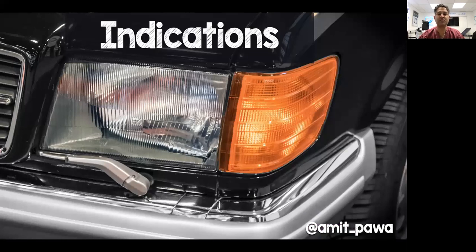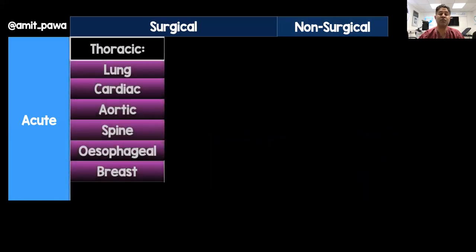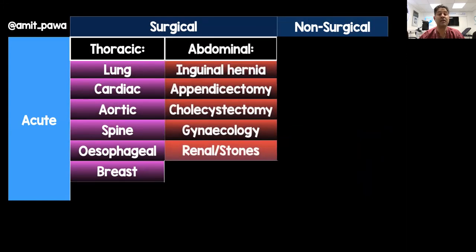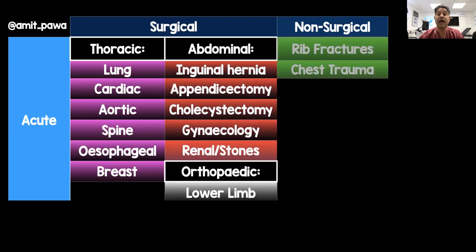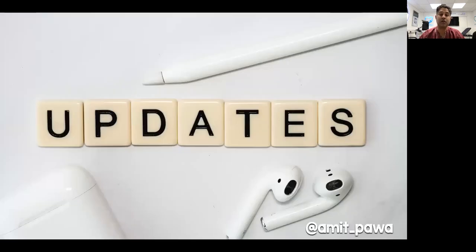There are many indications for the paravertebral block, which we can split into acute surgical and non-surgical. Probably the biggest area is thoracic surgery, including lung, cardiac, spine, and oesophageal surgery, as well as breast surgery. They've also been used in general and gynaecological surgery, renal stone surgery, and orthopaedic and lower limb procedures. Non-surgical acute use includes rib fractures and generalised chest trauma. On the chronic side, there's a role in persistent post-surgical pain and post-herpetic neuralgia.